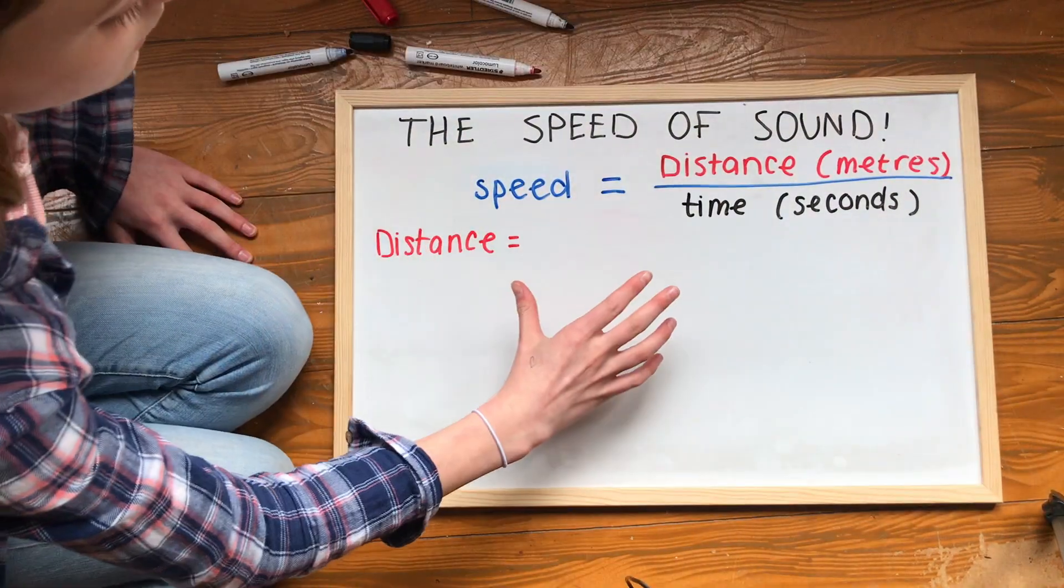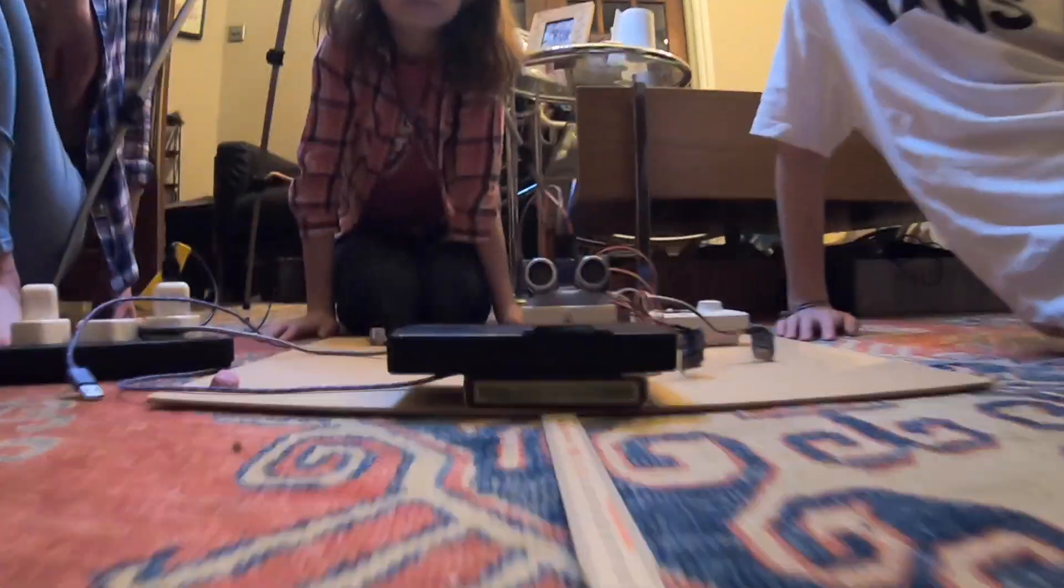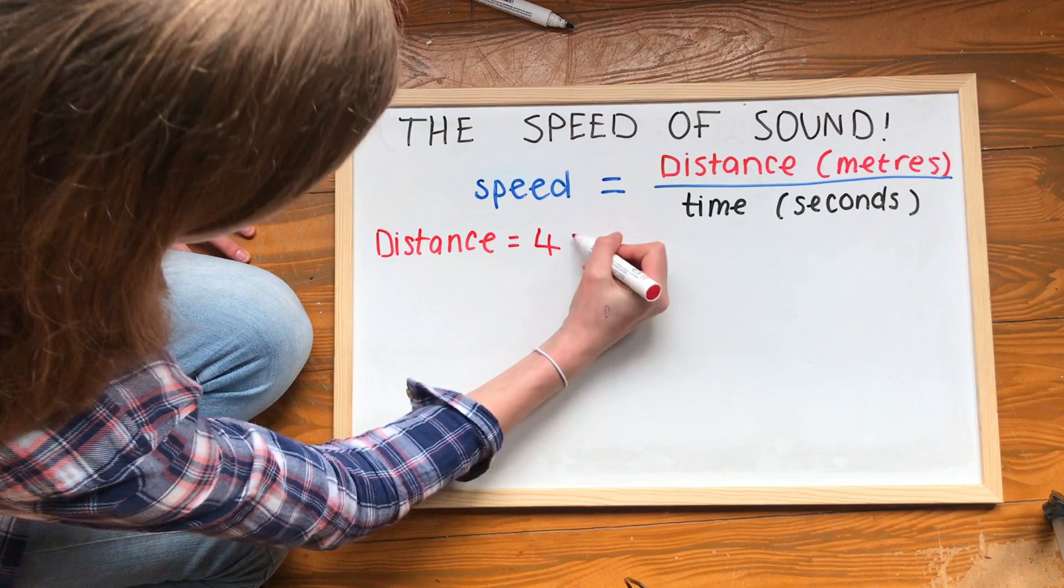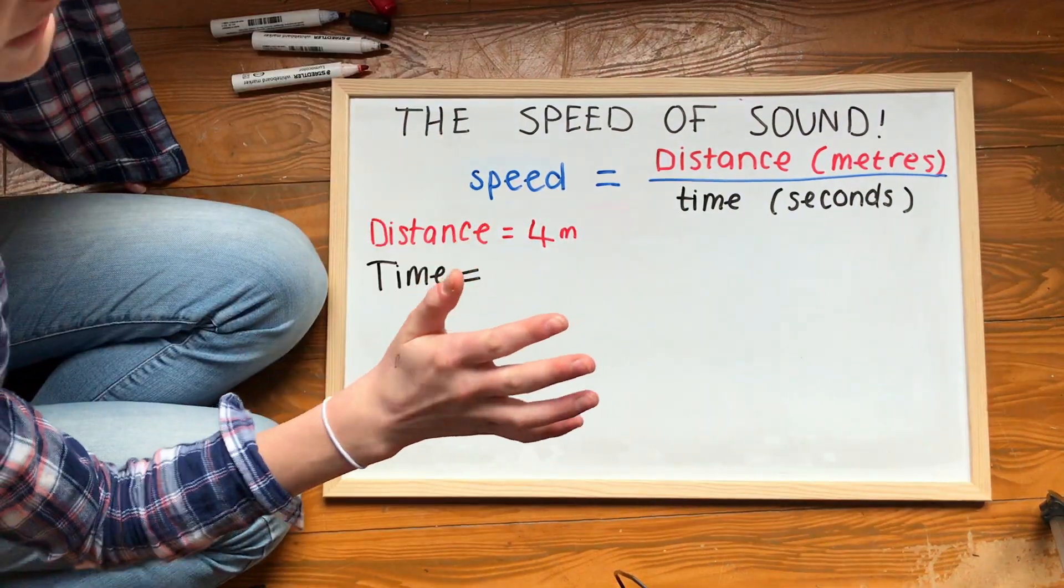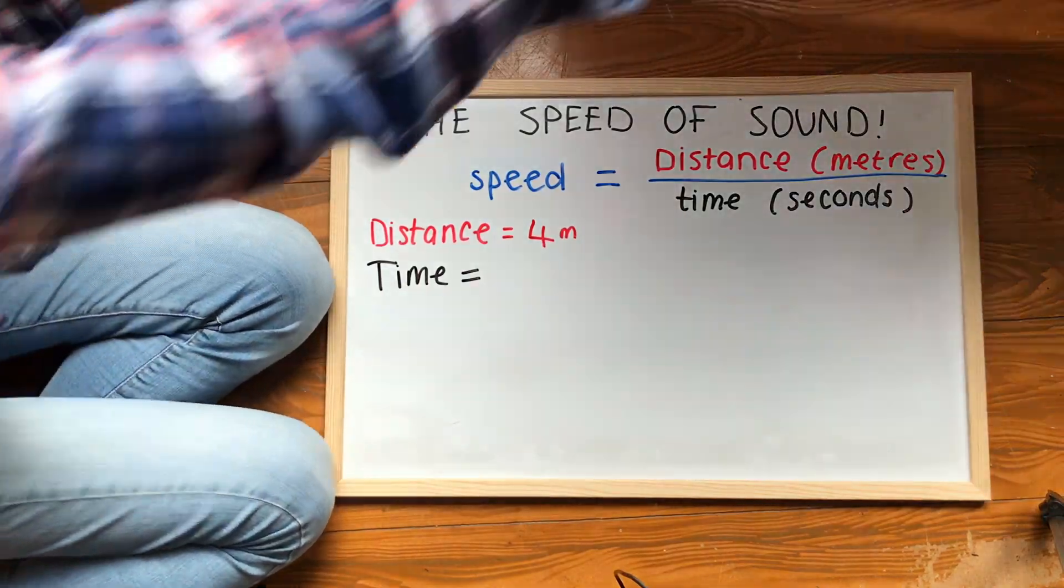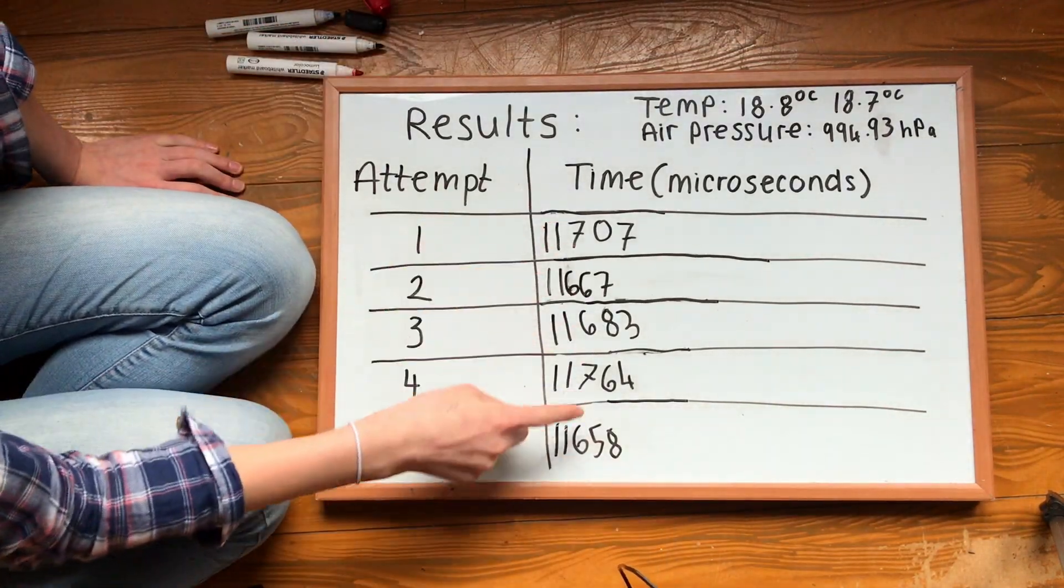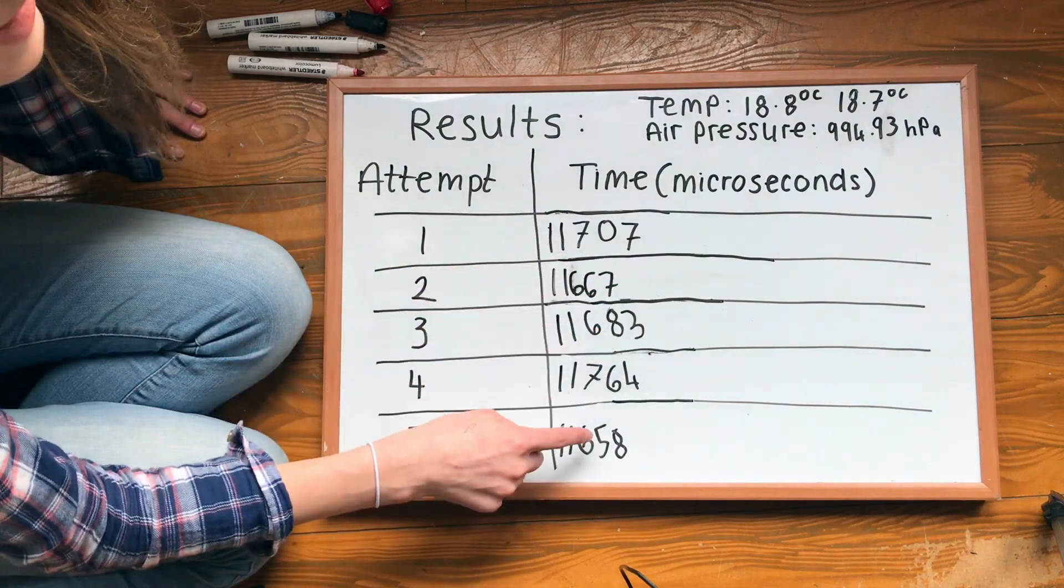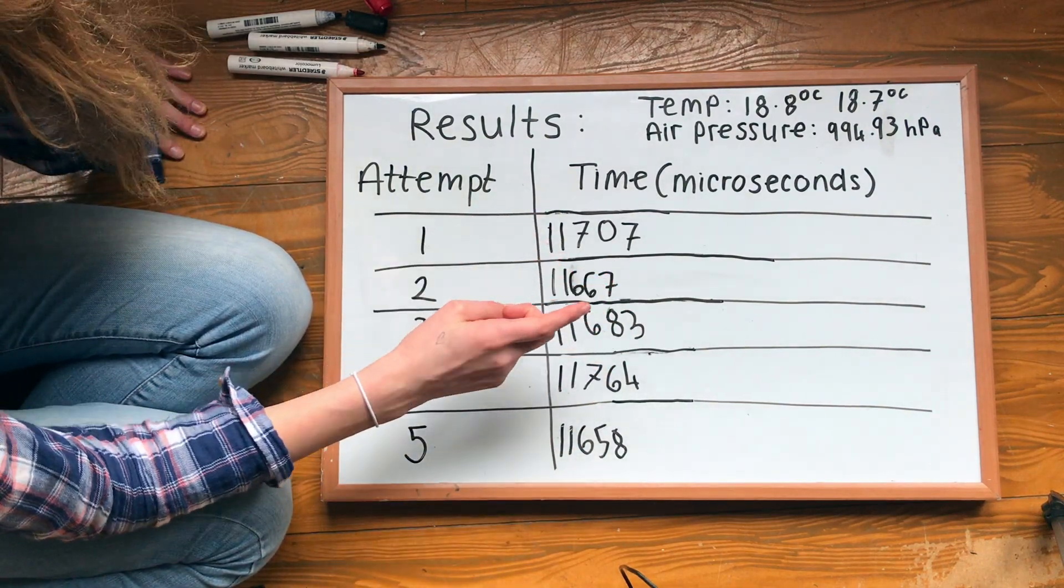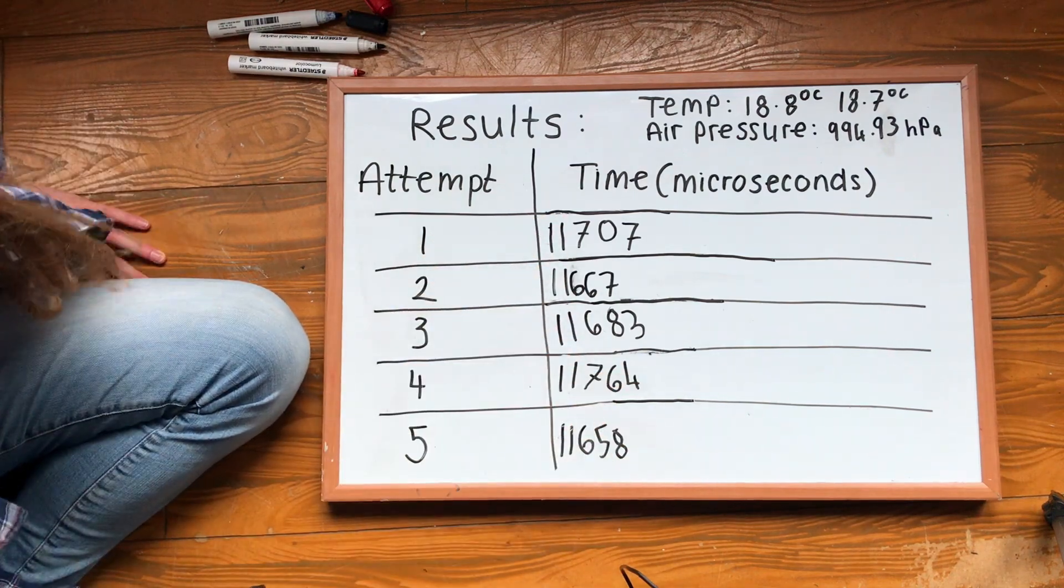The sound wave that our device gave out travelled 2 metres out and 2 metres back, giving us a total distance of 4 metres. We measured how long that took and did it 5 times, and my sister wrote how long it took each time down on this table. We're going to find the average time of these 5 results, and we'll use that to measure the speed of sound. We'll do that by adding all 5 measurements together, and then dividing them by 5.